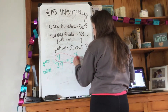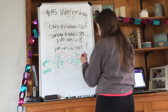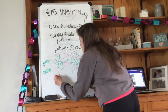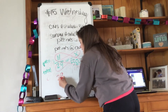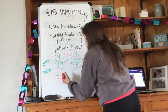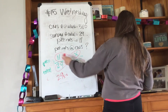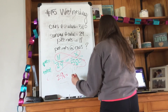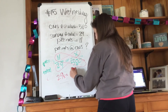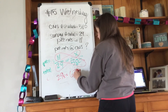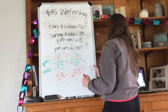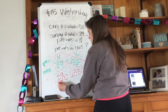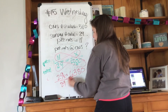Cross multiply, which gives me 29x equals 11 times 580, which is 6380.